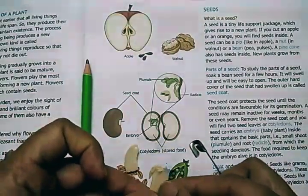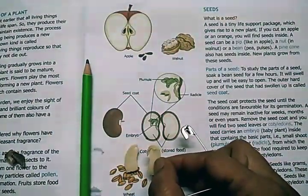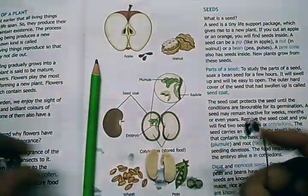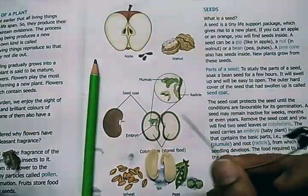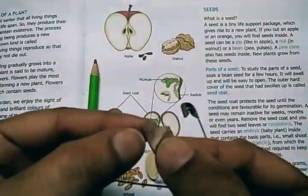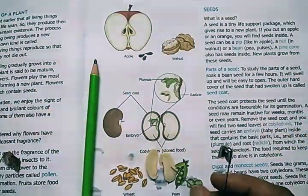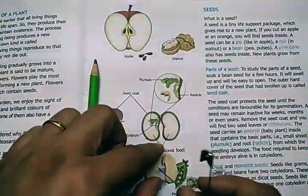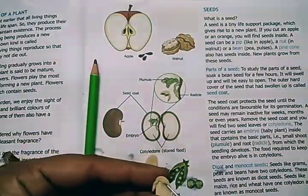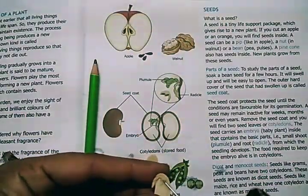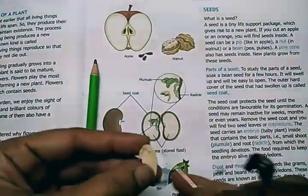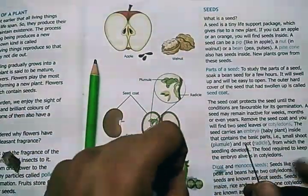So children, you now understand the three parts of a seed. The outermost part is the seed coat which protects the baby plant. Then there are the cotyledons which store food for the plant. And the third is the baby plant or embryo which will form the plant at a later stage.